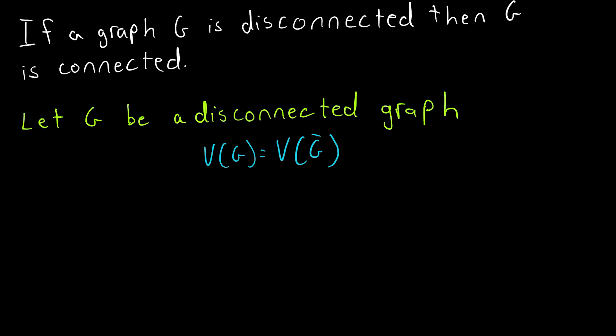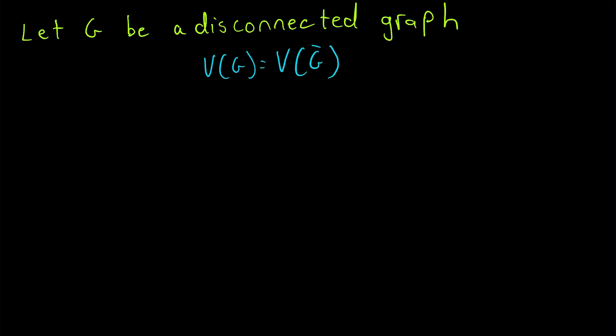We know that it's disconnected. So that is a helpful observation. So let's take two vertices from G and then we just need to show that they have to be connected in the complement. So we've taken two arbitrary but distinct vertices from G and since G is disconnected it must have at least two vertices. Since G is disconnected of course it's got at least two components.